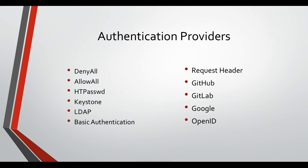For authentication providers in an OpenShift environment, you have many options to choose from. Some of them are very basic like deny all and allow all, and some of them are more complex. When you set up an OpenShift Enterprise environment, by default you get the deny all — so no one is allowed to access or log into this environment.